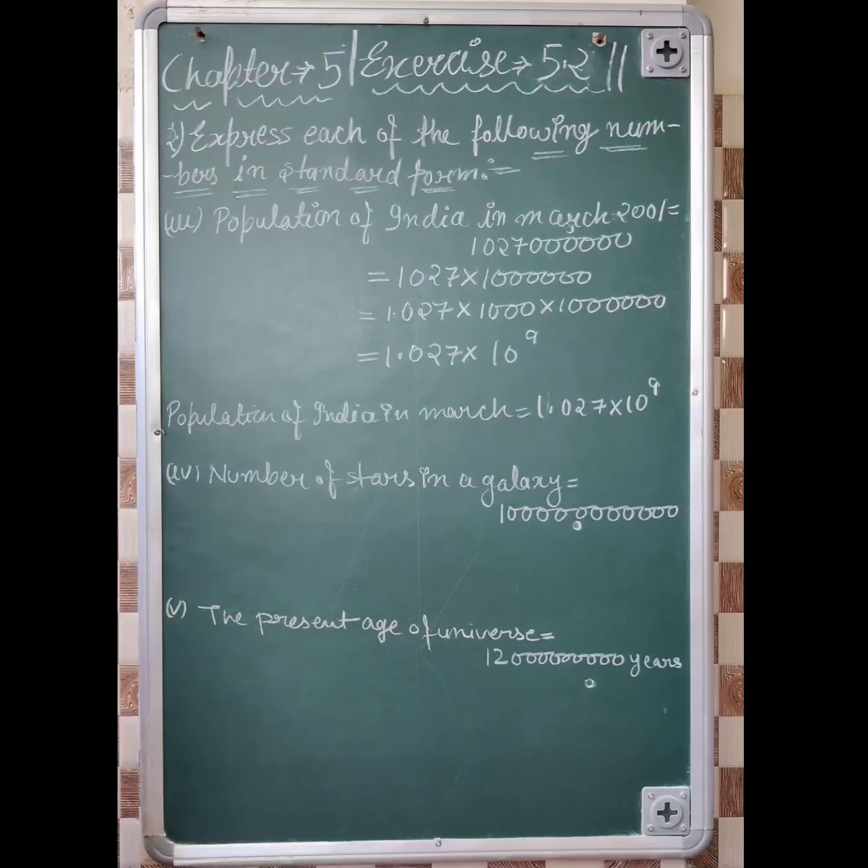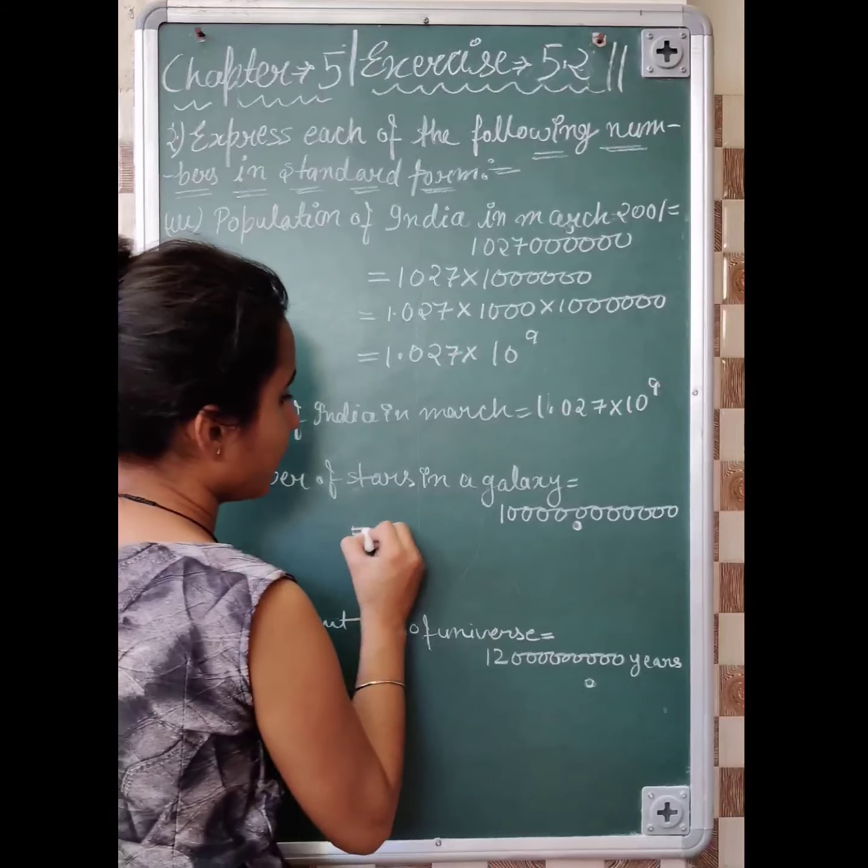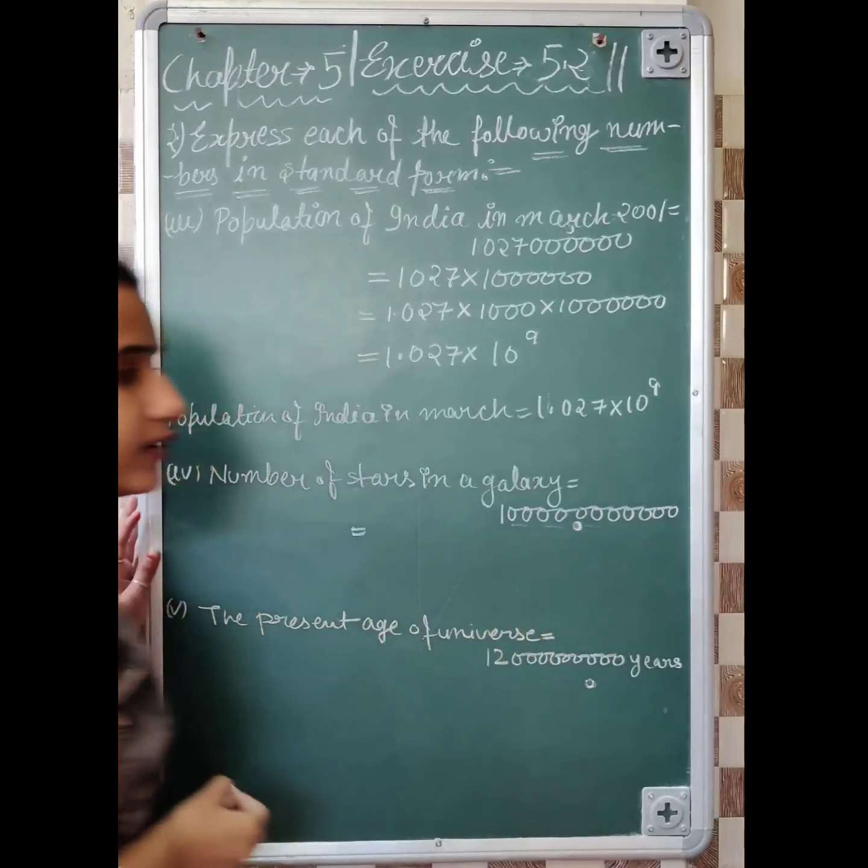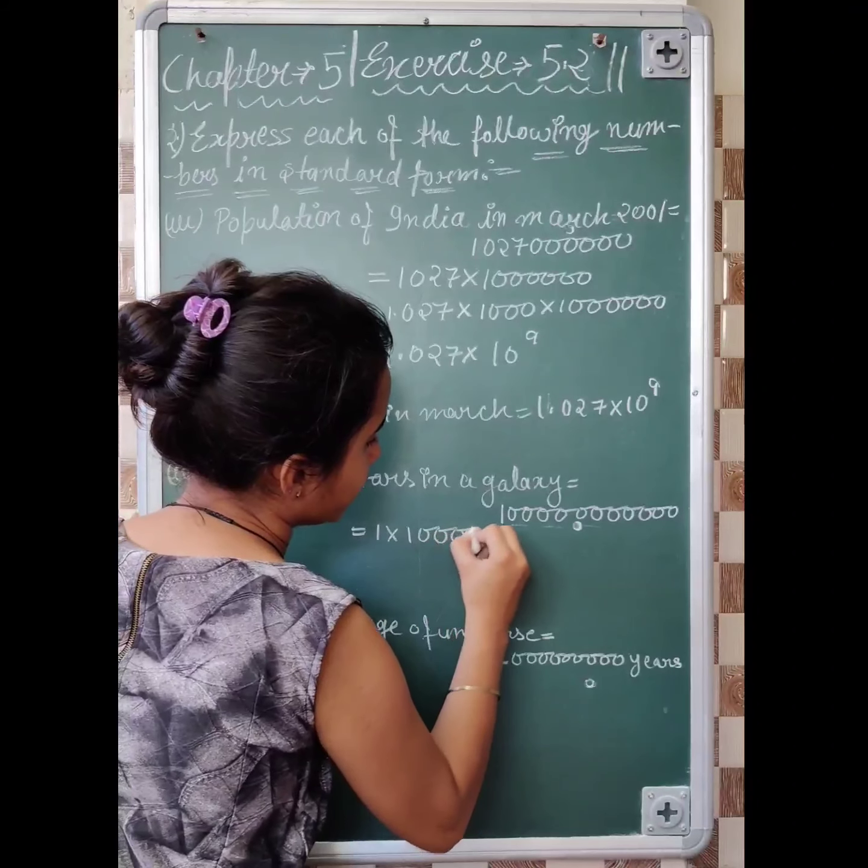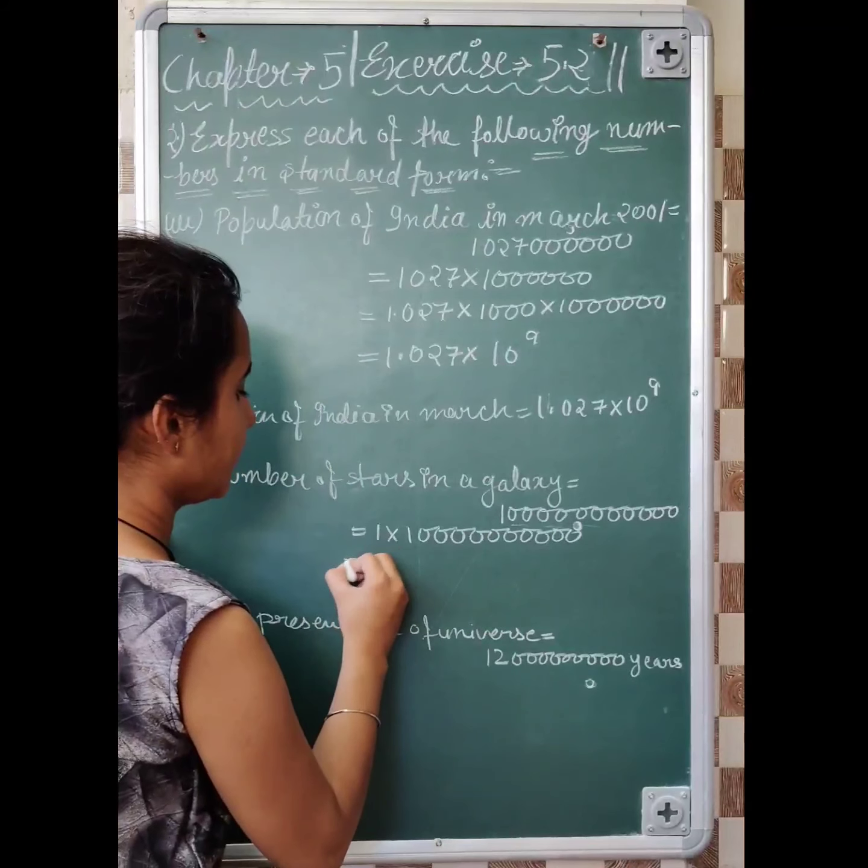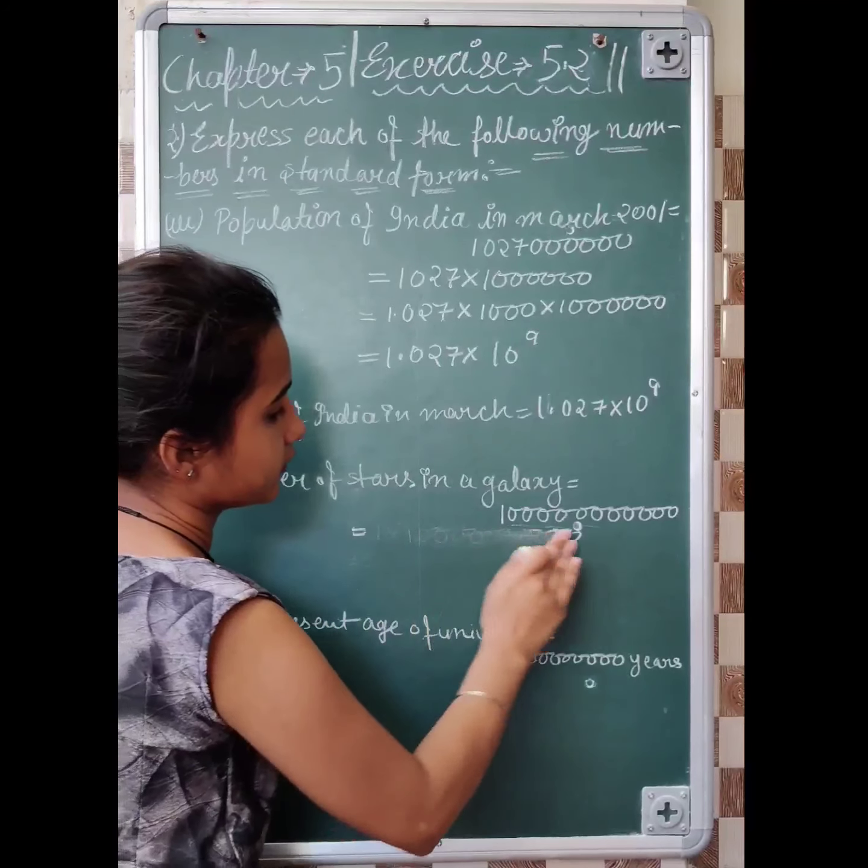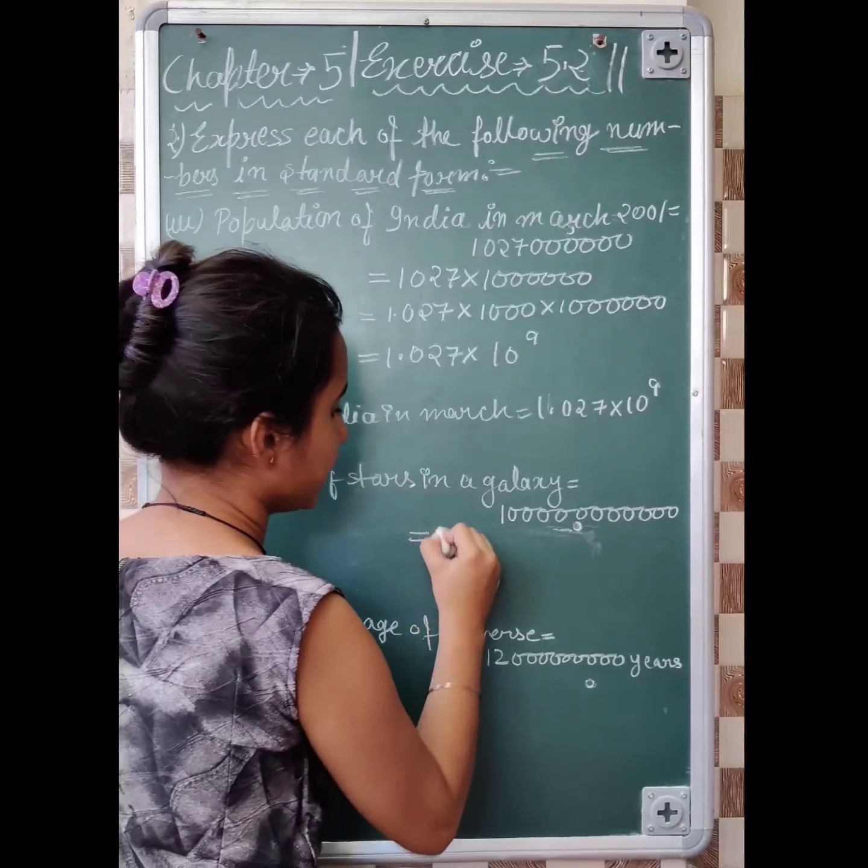Now, next question. Question 4, number of stars in a galaxy. How many stars are in our galaxy? Simple, you have 10, 11 zeros. 11 zeros, what will we do? Separate. You can directly write it.